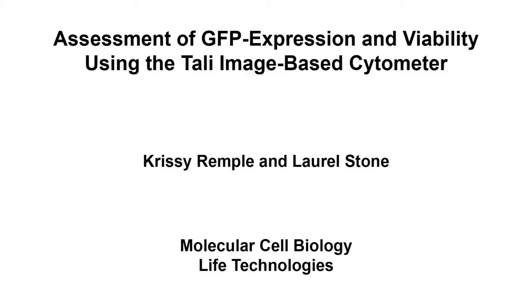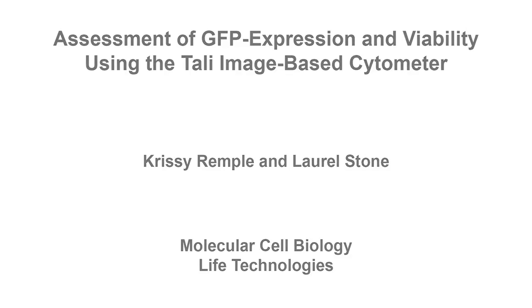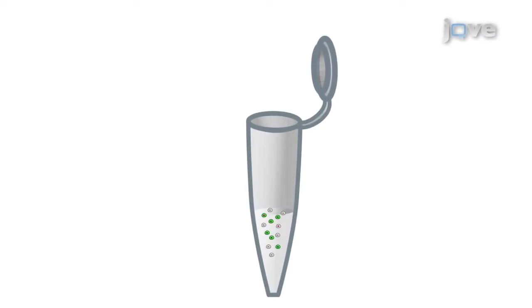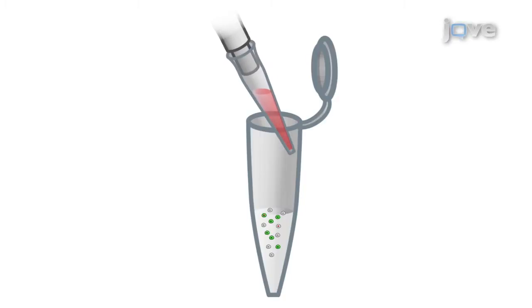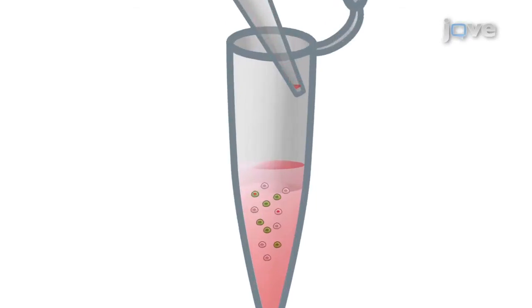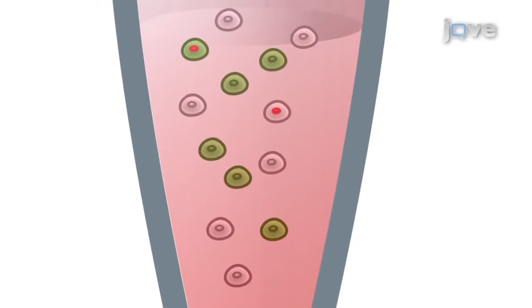This video demonstrates a procedure for determining cell viability in cells expressing GFP using the TALY image-based cytometer. GFP transduced cells are stained using the TALY viability kit, dead cell red, which stains all of the dead cells red with propidium iodide.